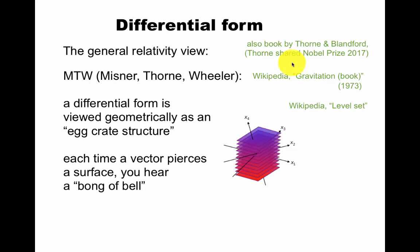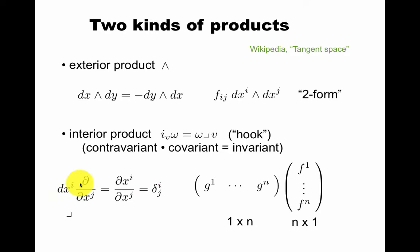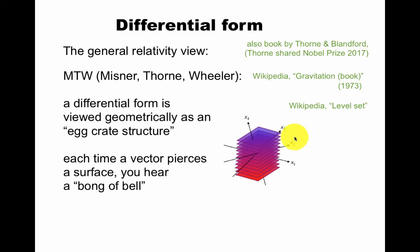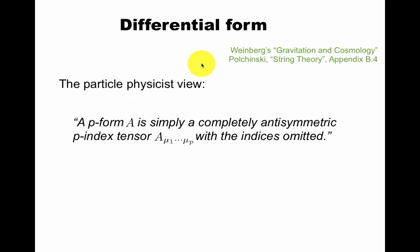What is a differential form from a general relativity point of view? In MTW, a famous book that has its own Wikipedia page, a differential form is viewed geometrically as an egg crate structure. So imagine each direction in space, you have a bunch of planes like this. In other direction, you would also have a bunch of planes. And each time a vector appears as a surface, you hear a bong bell. This is supposed to represent this kind of thing, that you get a number if you apply a differential form that we're trying to understand to a vector that we think we already understand. Those are, of course, the black arrows. It also gives the spirit of the time. In 1973, I guess, people were thinking very creatively. Particle physicist is more somber. A P-form A is simply a completely antisymmetric P-index tensor with indices omitted. Fine. It doesn't give you any intuition, but at least you can work with it.